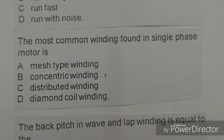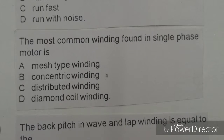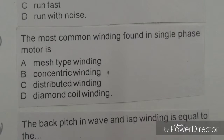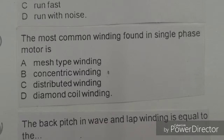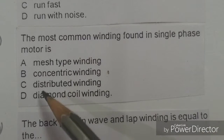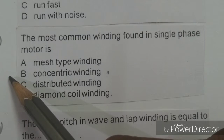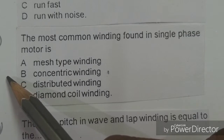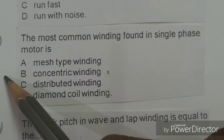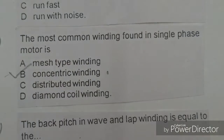Next objective: The most common winding found in a single-phase motor is. Options given: mush type winding, concentric winding, distributed winding, diamond coil winding. The right answer is B, concentric winding.